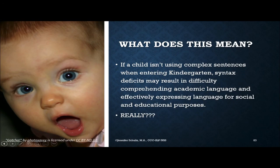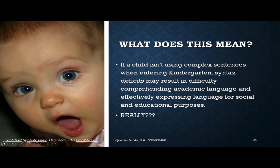What does all of this mean? We've talked about educational standards and developmental norms. When we look at child language development, we know that children very early — before they even get into preschool — start using complex sentences. So if a child isn't using and understanding complex sentences when they enter kindergarten, most likely there are syntax deficits in their language profile. These will cause difficulty understanding what their teachers are saying, expressing language for social communication like telling someone why they did or didn't want something, and for educational purposes.